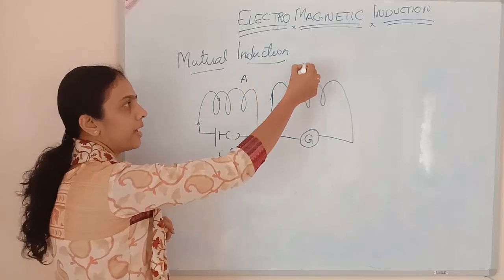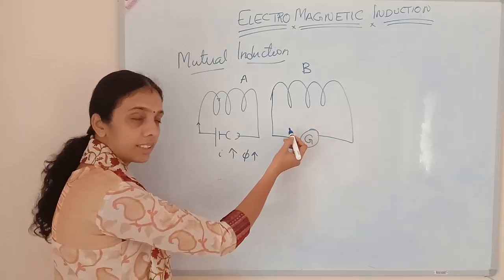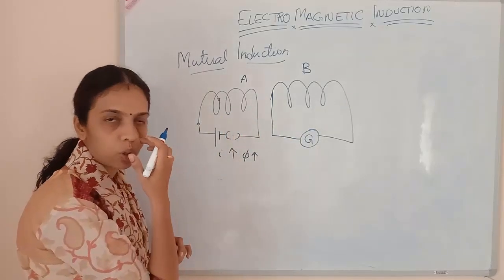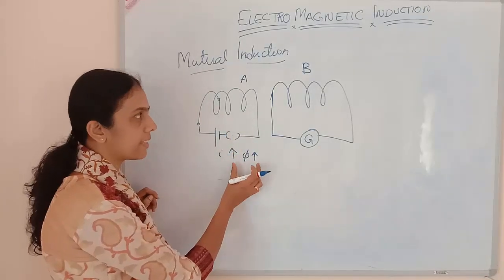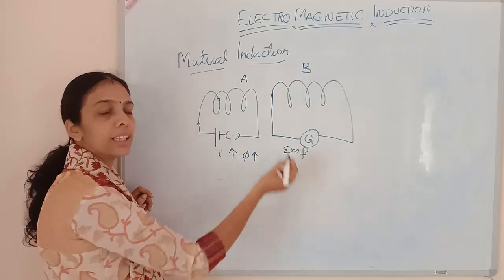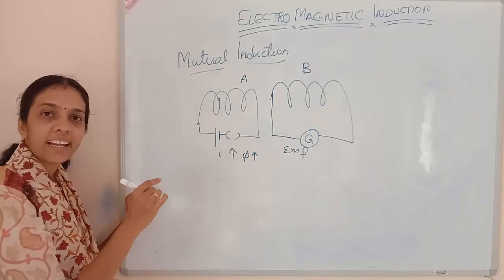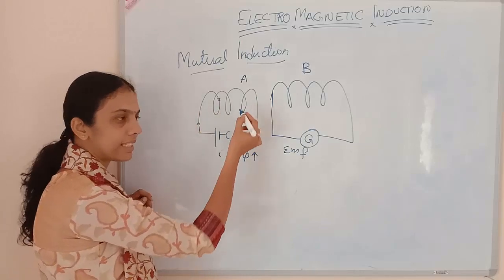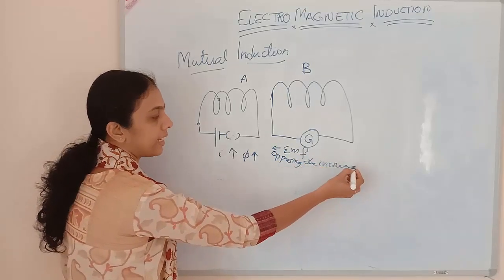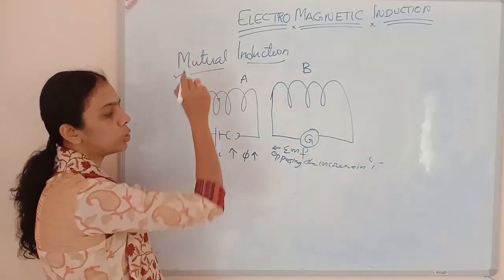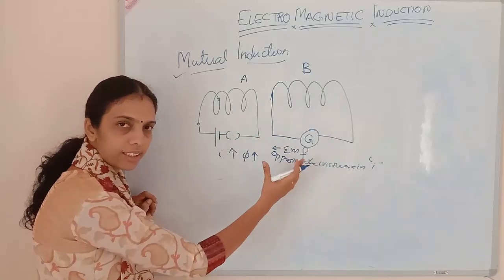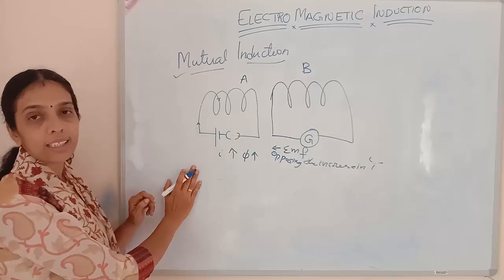Considering coil A and coil B — the changing flux in coil A will cause an EMF in coil B. This EMF will be opposing the direction of increase of current in the first coil. A change in flux is causing an EMF in the other coil, which opposes the increase in current. This is mutual induction: flux linked with one coil changes, giving an induced EMF in the other coil which opposes the change in current in the first coil.